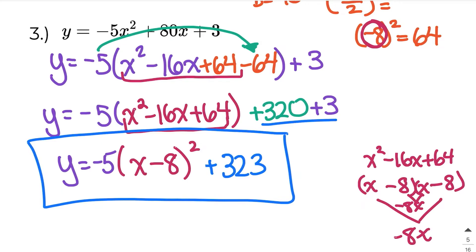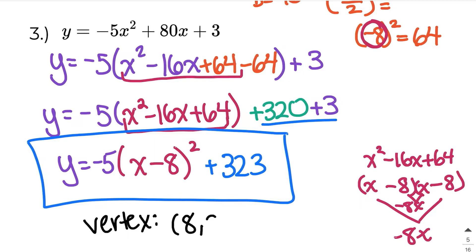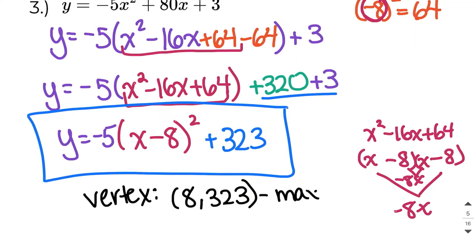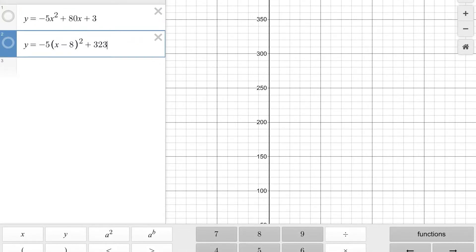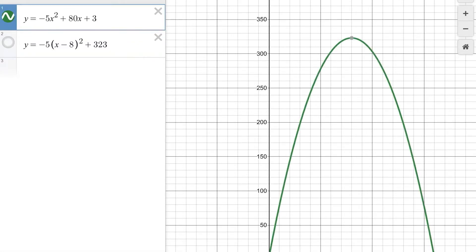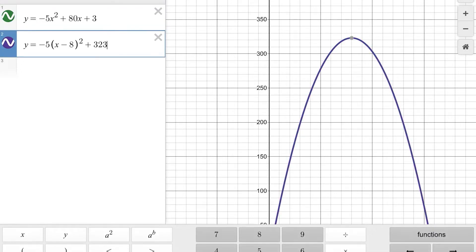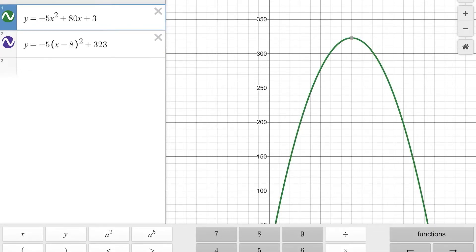The nice thing about vertex form is now I know what the vertex is just by looking at the equation, whereas before in standard form I didn't. So we can say our vertex is going to be (8, 323). We can also say it's going to be a maximum because this is a negative a value, which means our parabola opens down and the vertex is right on top. In Desmos, we can see standard form and vertex form line up perfectly, confirming the vertex at (8, 323) is correct.